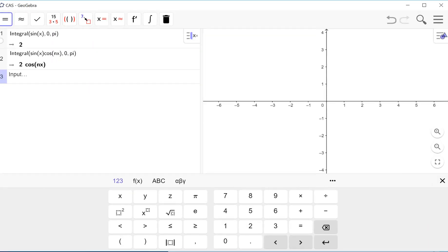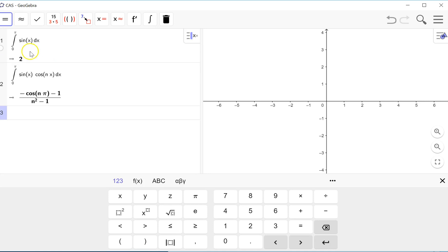Alright, so I've already computed a couple of integrals here for you. The second one is not correct because I didn't put a space in here, so let's do that. So when we did the integral from 0 to π of sine of x, we get 2. When we do the integral from 0 to π of sine x cosine nx dx, we get this negative cosine nπ minus 1 over n squared minus 1. Two things that we notice.